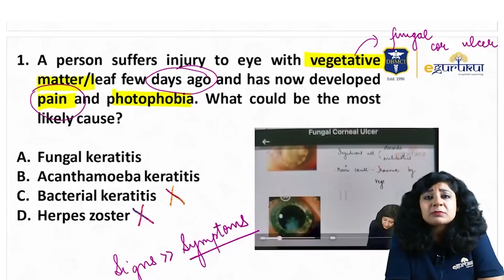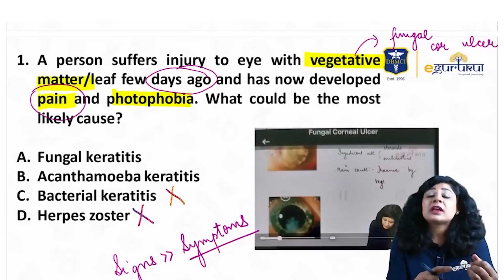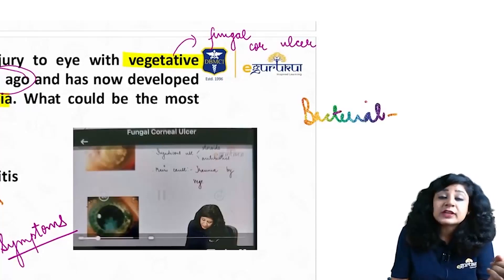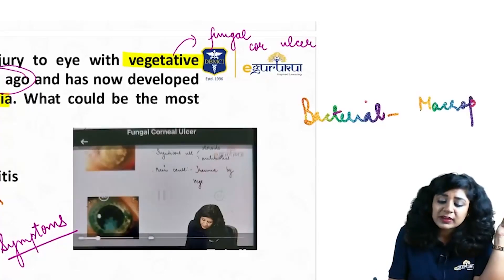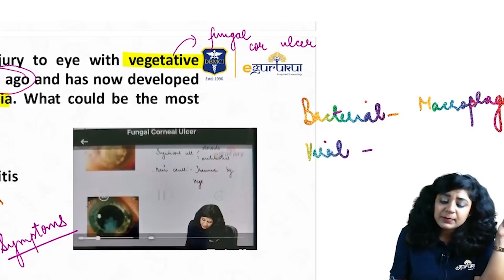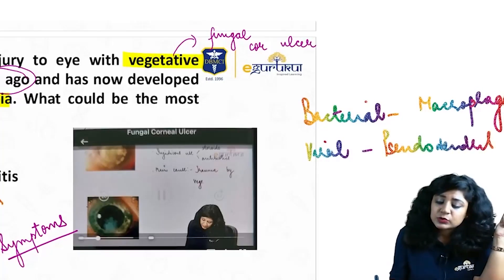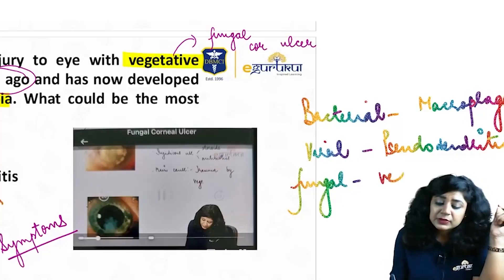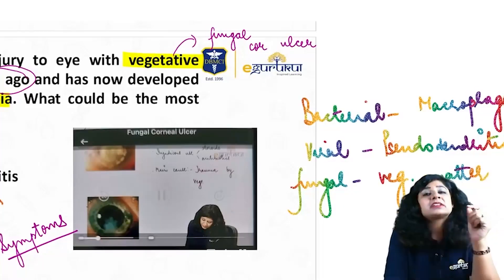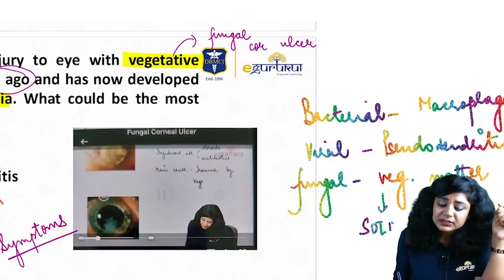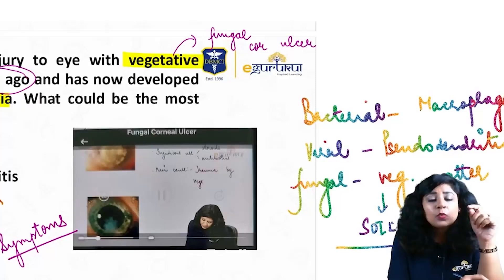Acanthamoeba keratitis may be confused with many other types of ulcers. It can be confused with bacterial ulcer because the trophozoite stage of acanthamoeba resembles macrophages. It can be confused with viral keratitis due to its pseudo-dendritic pattern. It can also be confused with fungal keratitis due to association with vegetative matter — since acanthamoeba is a free-living amoeba present in soil, contaminated vegetative matter could theoretically cause it.